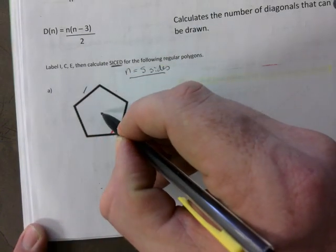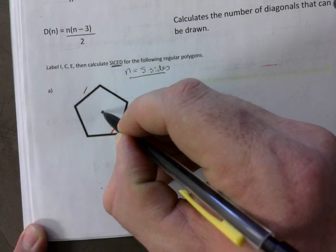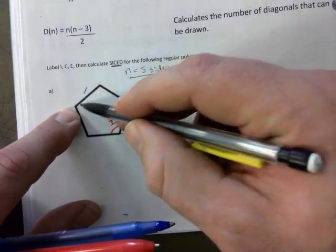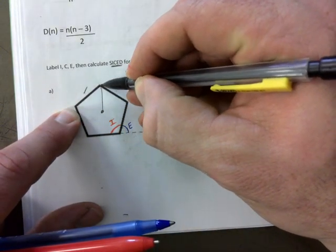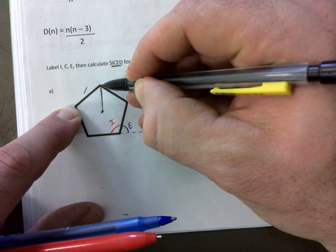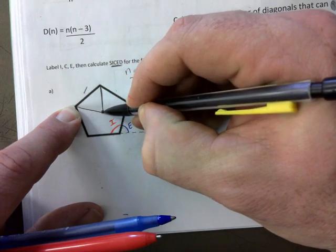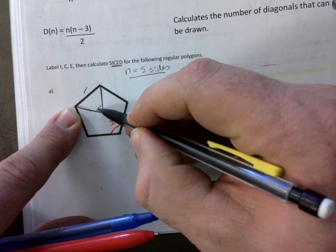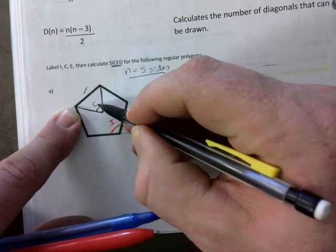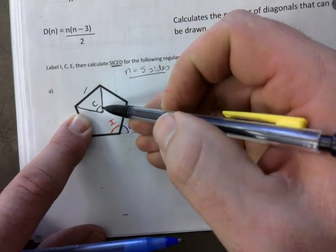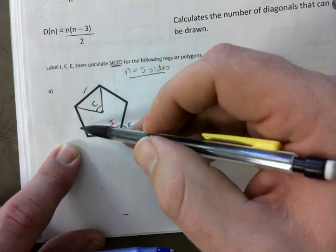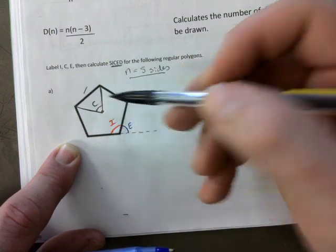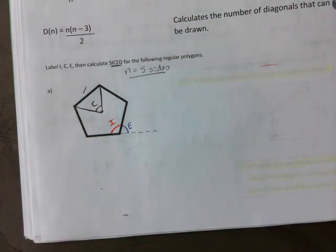C stands for central. You go to the center and pick any side around that shape. I'm going to pick this one here. And you just go from the center to one side, to one of the ends of that side. And then you go and connect to the center with the other end of that side. And we're not done yet. This, this right here is one central angle. There are actually, if you count how many sides again, five sides, right? There are actually five central angles in this shape. Okay.